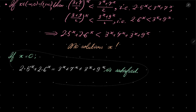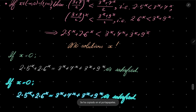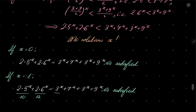And what if x equals 1? If x equals 1, on the left-hand side we have 2 times (5 + 6 − 3) = 2 times 8 = 16. On the right-hand side we have 7 + 9 = 16. So it's satisfied.